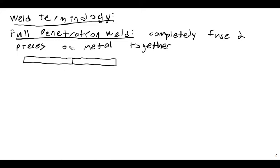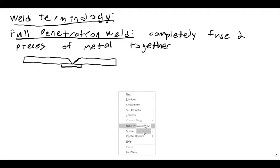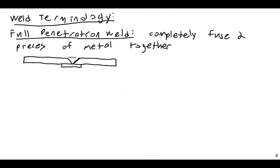With a full pen weld, you still need a temporary or permanent backer plate at the bottom to keep the molten weld material from dripping through. You'd cut the end of each plate at an angle before joining them. Then the weld material fills in the gap with molten steel — you come along and fill the gap, and when it cools, it bonds together.